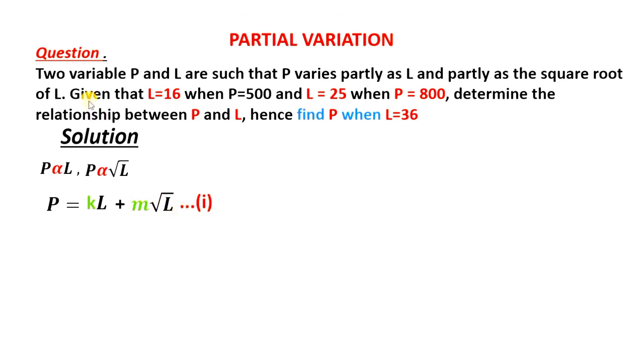So in the equation, we are told given that L is 16 when P is 500, so we will have in this equation 1, P is 500 when L is 16, so that we have 16K plus M root 16.